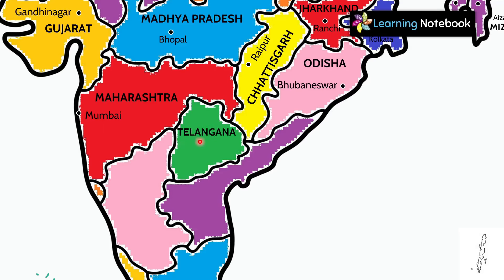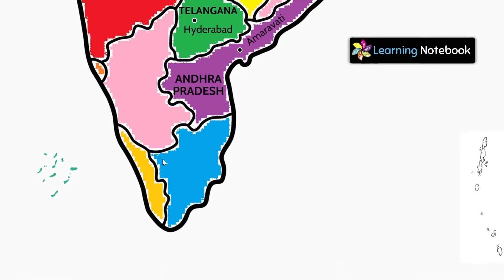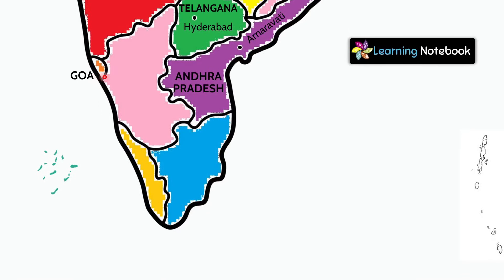This state is Telangana and its capital is Hyderabad. Now this Indian state is Andhra Pradesh and its capital is Amaravati. Now this is Goa and its capital is Panaji. This state is Karnataka and its capital is Bengaluru.